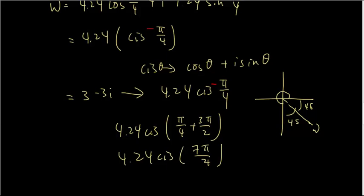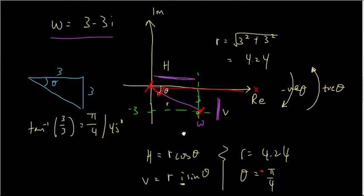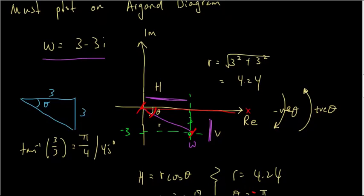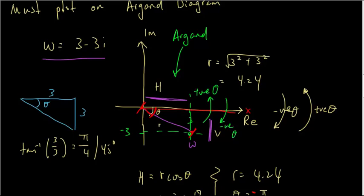So the key thing is: whenever you convert rectangular form into polar form, always draw it out on the Argand diagram. Plot it and decide whether your theta should be positive or negative. If you're calculating the angle in the clockwise direction it's always negative, and if calculated anti-clockwise it's always positive.